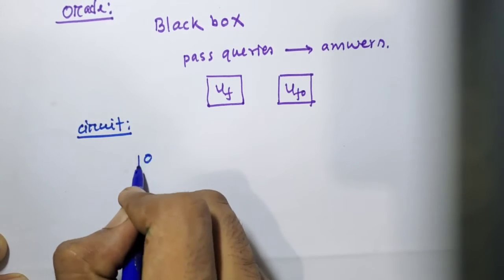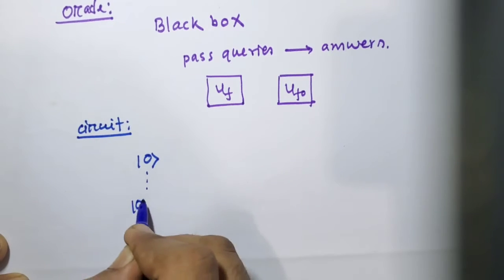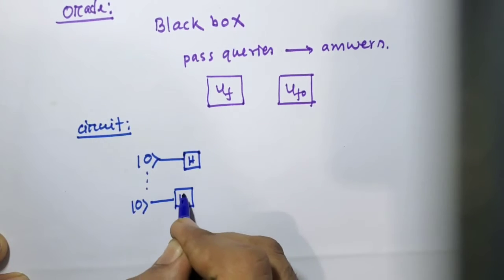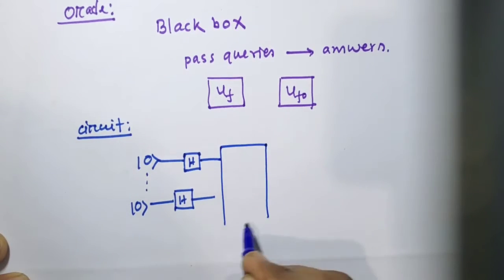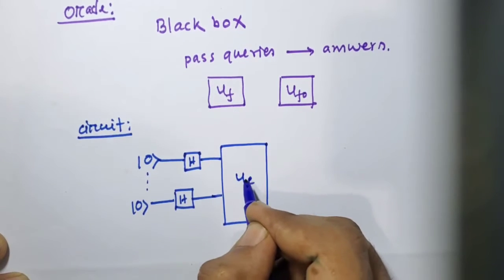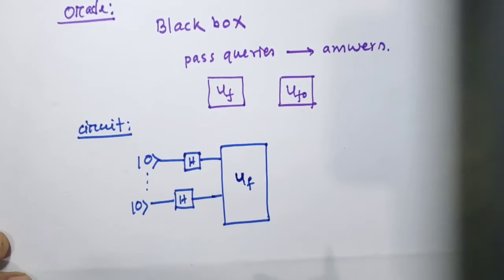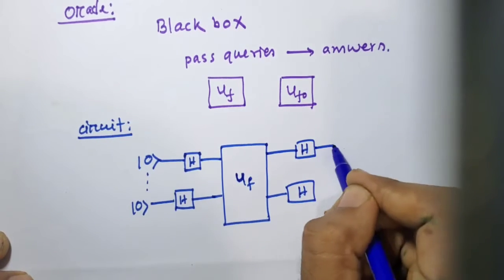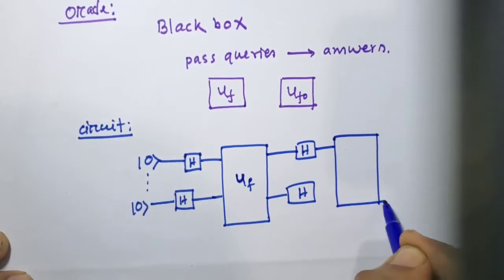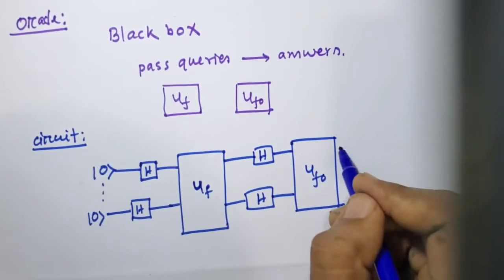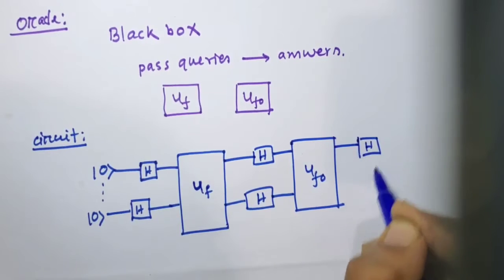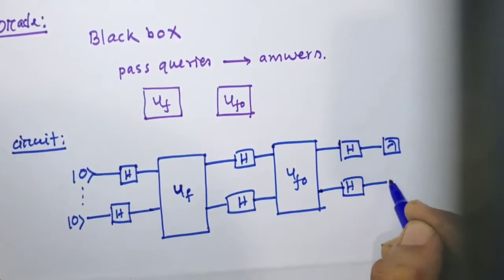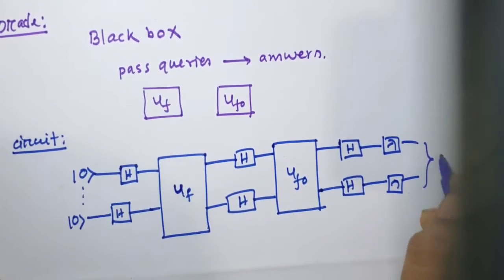The circuit goes like this. Here are our qubits. First, we pass them into a Hadamard gate for uniform superposition. Then we pass them into our first oracle. Then again, a set of Hadamard gates and now the second oracle. After that, we just measure these things and get our output, the result.